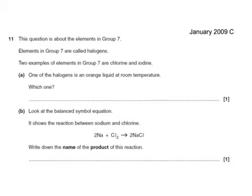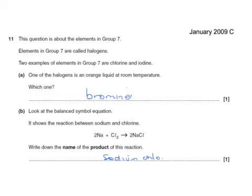Another past paper question about elements in group 7. They're the halogens. Two examples are chlorine and iodine. One of these is an orange liquid at room temperature. Now, it's not chlorine or iodine. This one would be bromine. And look at the balance symbol equation between sodium and chlorine. They always do these funny Ls so they don't look like 1s. Write down the name of the product of this reaction. That would be sodium chloride. And there's the answers. It's bromine or its formula and sodium chloride.